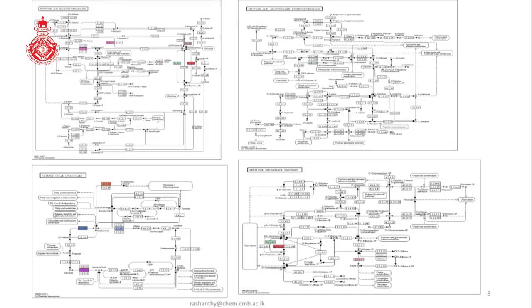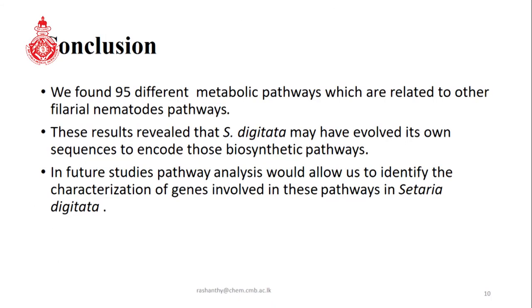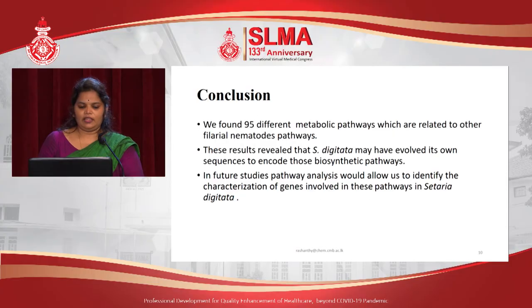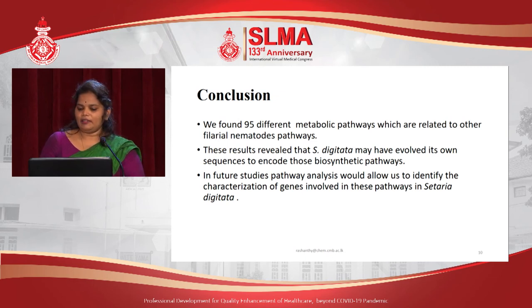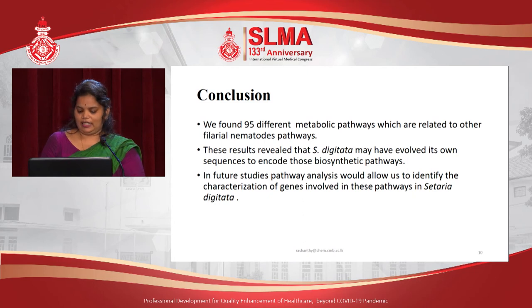These are the identified metabolic pathways in Cetaria Digitata, including some of the maps obtained in the KEGG analysis database. In conclusion, we found 95 different metabolic pathways which are related to other filarial nematode pathways. These results reveal that Cetaria Digitata may have evolved its own sequences to encode those biosynthetic pathways. In future studies, pathway analysis would allow us to characterize the genes involved in these pathways in Cetaria Digitata.